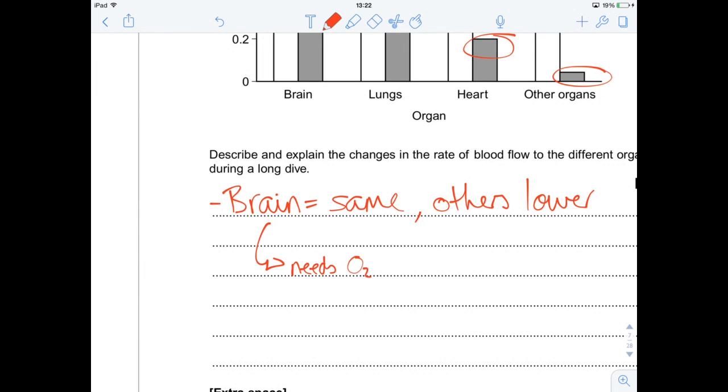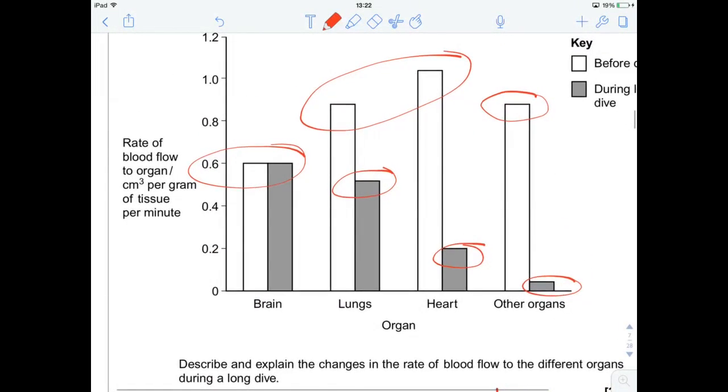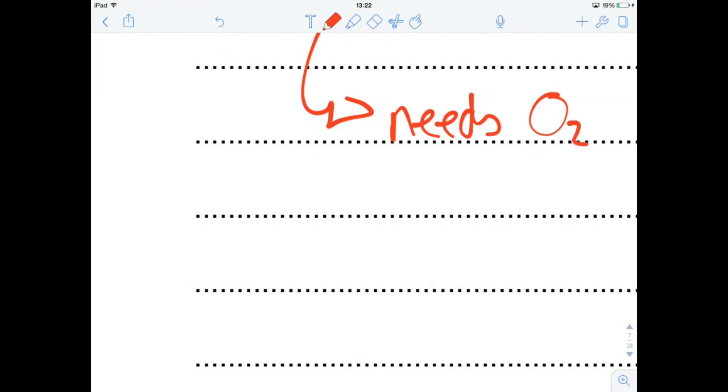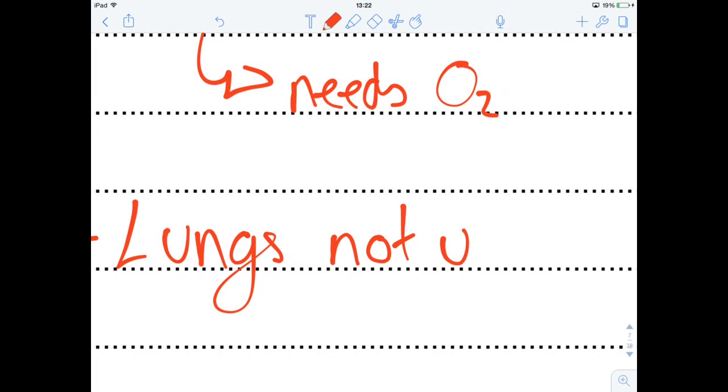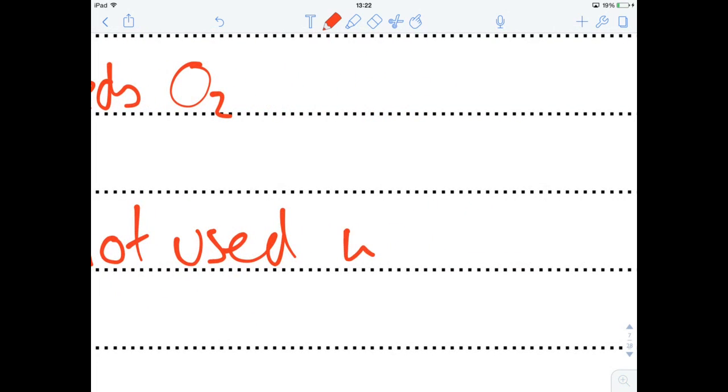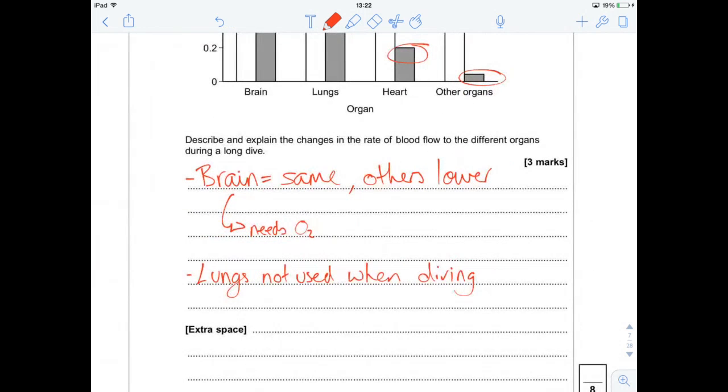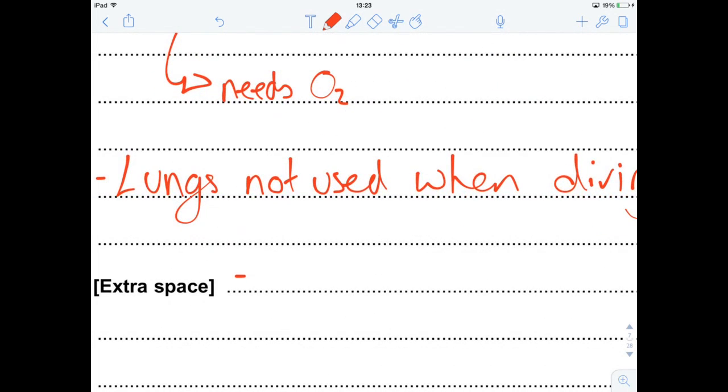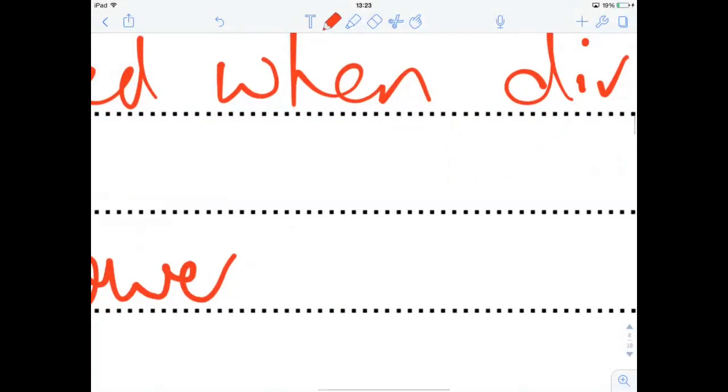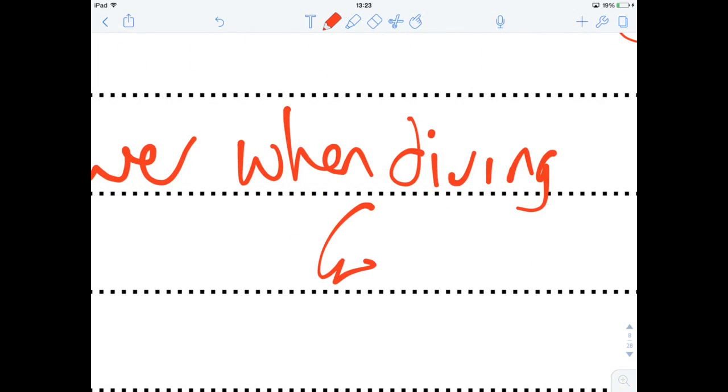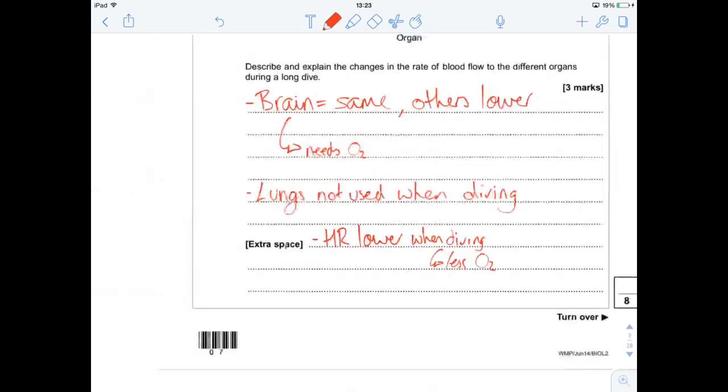What else are we looking at? Why do you think the lungs are reduced? Well, the lungs aren't going to be used. Okay. Lungs not used when diving. So they need less oxygen. We've pretty much got all the marks now. But what else can we say? And the heart is pumping less. So heart rate lower when diving. So you slow your heart rate down. So you need less oxygen. Nice. Three marks there.